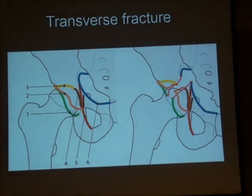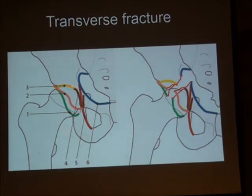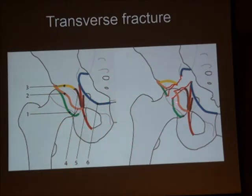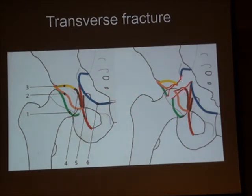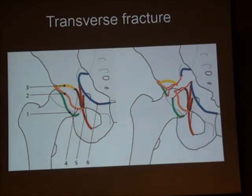Looking at the schematic of the intact acetabulum versus the transverse fracture pattern: on the intact side, the posterior wall, anterior wall, dome, ilio-ischial line, teardrop, and iliopectineal line are all intact. With the transverse fracture, there's disruption of the posterior wall, anterior wall, and iliopectineal line. The dome remains mostly in place. Importantly, the relationship between the teardrop and the ilio-ischial line remains the same — this is a key distinguishing feature.